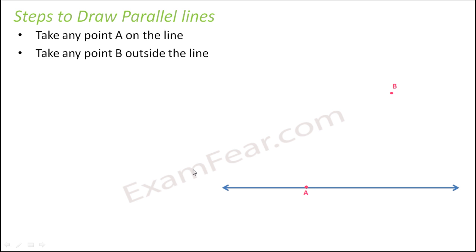Now please make sure that this point B can be anywhere outside the line. It just tells you that the line which you are going to draw will be on this point. If you considered this point B at a different location, the line that you will get will be formed there. So that's the only difference.